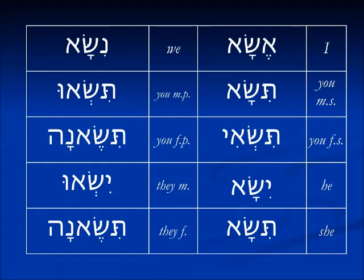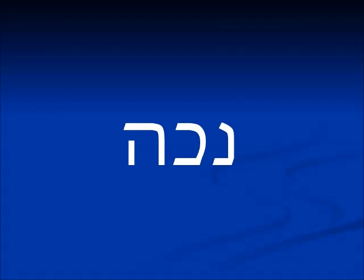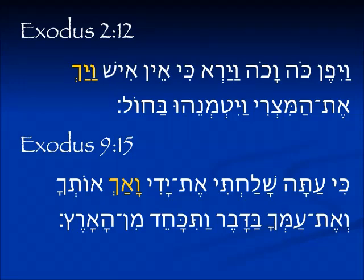So when these two problems collide — a Pe-Nun verb with a Lamed-He verb — for example nacha, which means to smite, we wind up with just one letter of the root appearing. The Nun drops off because it's in the imperfect, and the He drops off because it's in the reversing vav imperfect form. Exodus 2:12, talking about Moses — so he turned this way and that way.